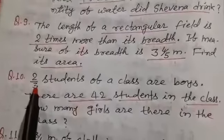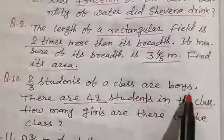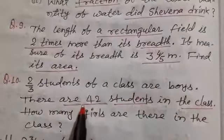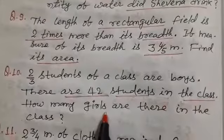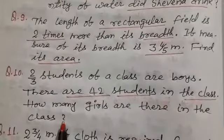Question number 10 is 2 by 3 students of a class are boys. There are 42 students in the class. How many girls are there in the class?